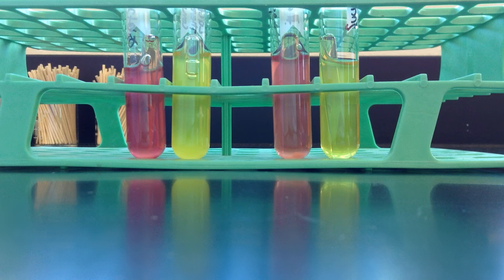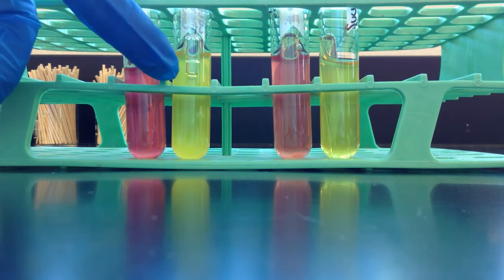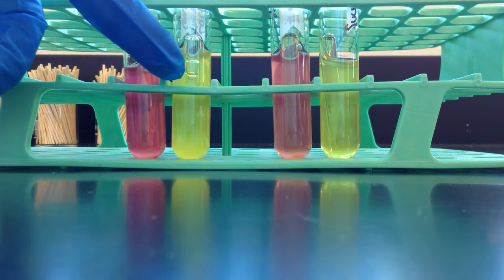So here on my lactose tubes on the left, I've got yellow, which indicates acid is produced. The phenol red turned yellow.